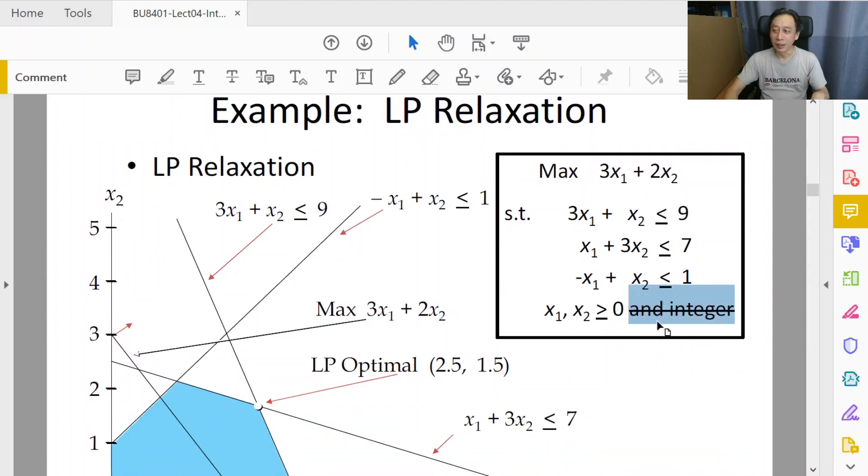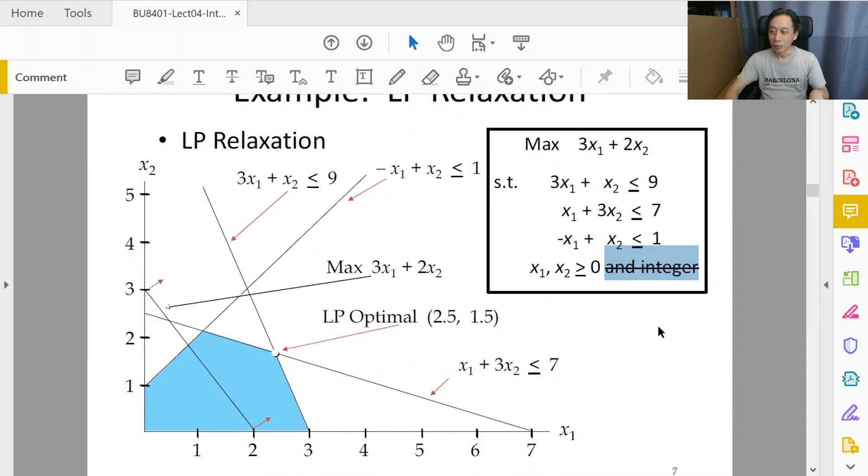This cancellation is intentional to show that we are trying to solve the original model by temporarily ignoring the integer constraint. Then we see that the LP relaxation brings us to the optimal solution at this point, where the cyan shaded region is showing us the set of all possible candidates—that is the set of all feasible solutions, the feasible region.